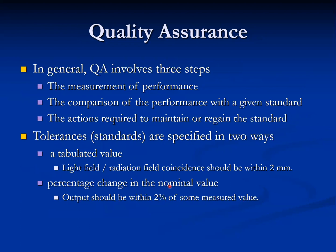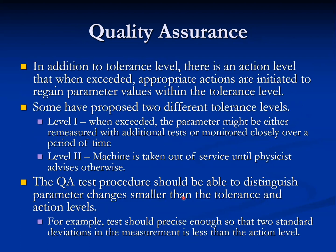Quality assurance in general involves three steps: the measurement of performance, the comparison of performance with a given standard, and the action required to maintain or regain the standard. Tolerances are specified in two ways — tabulated values, for example, light field and radiation field coincidence should be within 2 mm, and output should be within 2% of the nominal value. Beyond these tolerance levels, there is an action level that, when exceeded, initiates appropriate action to regain the parameter value within tolerance.